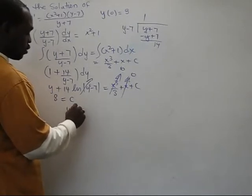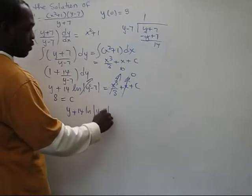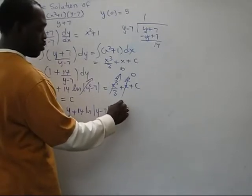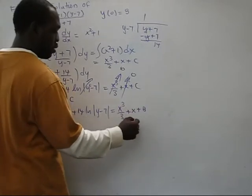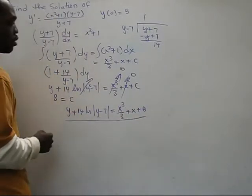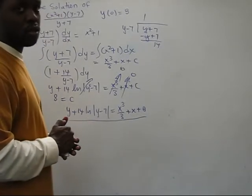Y plus 14 natural log of Y minus 7 equals X cubed over 3 plus X plus 8. And that's the solution. Thank you.